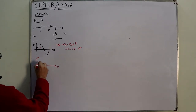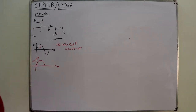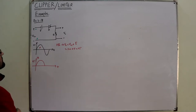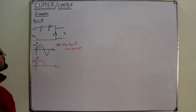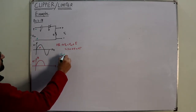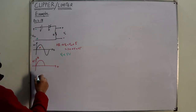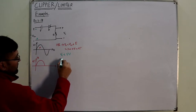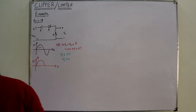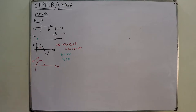So the output voltage has a maximum value of 25 volts. Now for the negative cycle — what would happen? If this becomes minus, this source is already making it forward biased. So when V_input is less than 5 volts, this would be forward biased. But when V_input is less than minus 5 volts, it would be an open circuit.